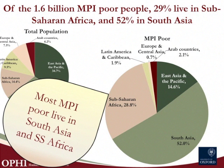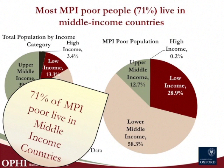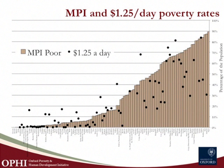Across those 108 countries, where do those 1.6 billion poor people wake up in the morning? Just over half of them are in South Asia and 29% in sub-Saharan Africa, followed by East Asia. If we ask the same question in terms of the income levels of their countries, most of the MPI poor people live in middle-income countries — more than 70% in fact — with 29% living in low-income countries. Another question is what value does this add to income poverty — does it give the same percentage of people who are poor per country, or is it different?